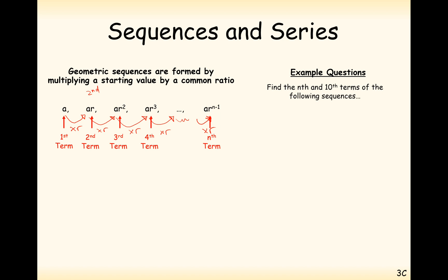So find the nth and tenth terms of the following sequence — a little question here. We can clearly see that the common ratio each time is 2, so R is equal to 2. Just check all the ones along — times 2, times 2. And the starting term is 3, so A is the value 3. To get the nth term, we just substitute into this formula — this is effectively the formula for the nth term of a geometric sequence.